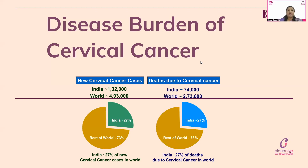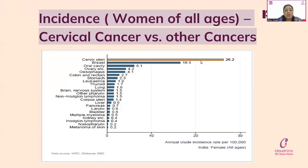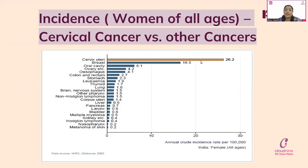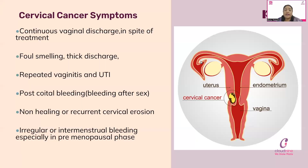Looking at the bar graph which represents all cancers in women — skin cancer, brain cancer, lung cancer, liver cancer, stomach cancer, ovarian cancer, breast cancer — cancer of the uterus is more prevailing than all other cancers in women in India.